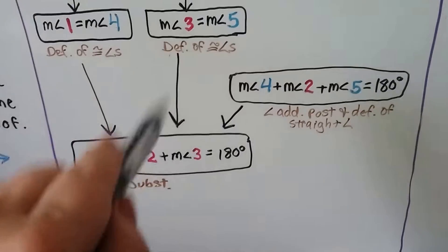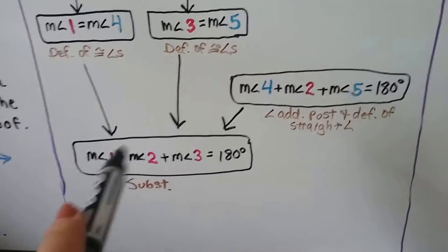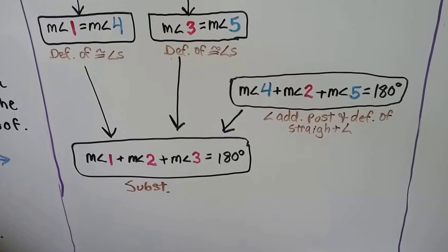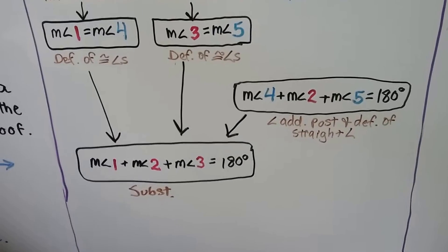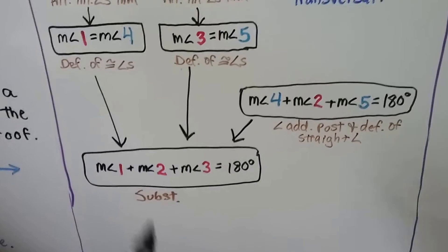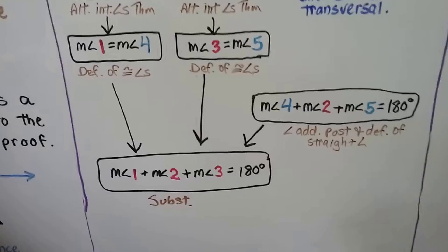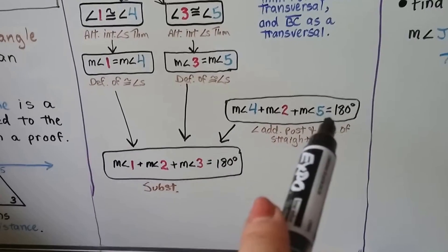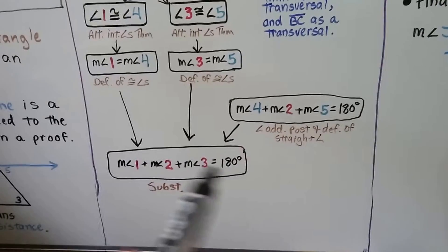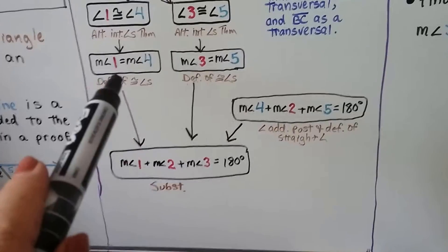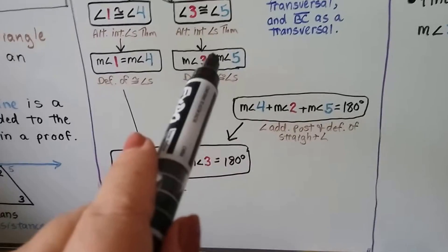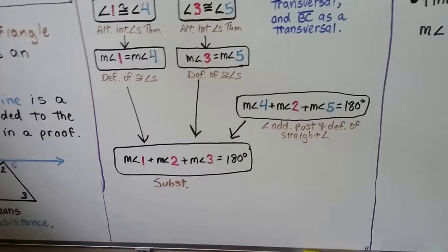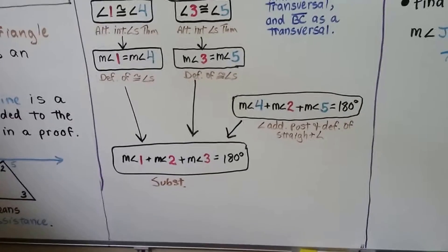All of this brings us to: the measure of angle 1 plus the measure of angle 2 plus the measure of angle 3 is equal to 180 degrees, by substitution. We know that 4 and 2 and 5 equal 180 degrees, and since 4 equals 1 and 5 equals 3, we substitute them in and get 1 plus 2 plus 3 equals 180 degrees.